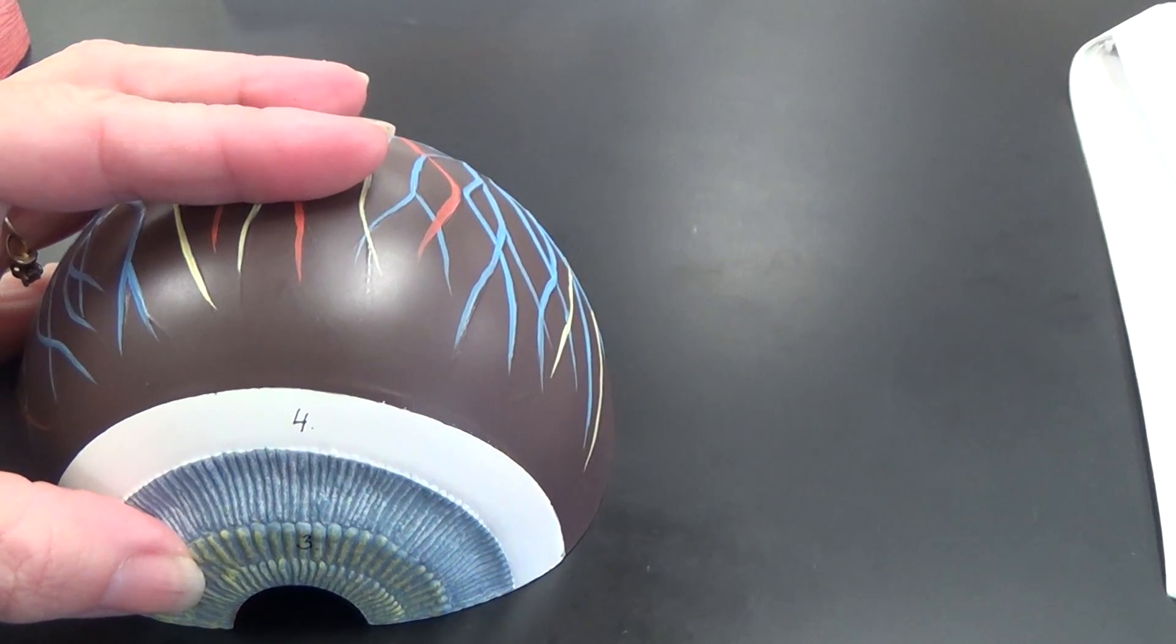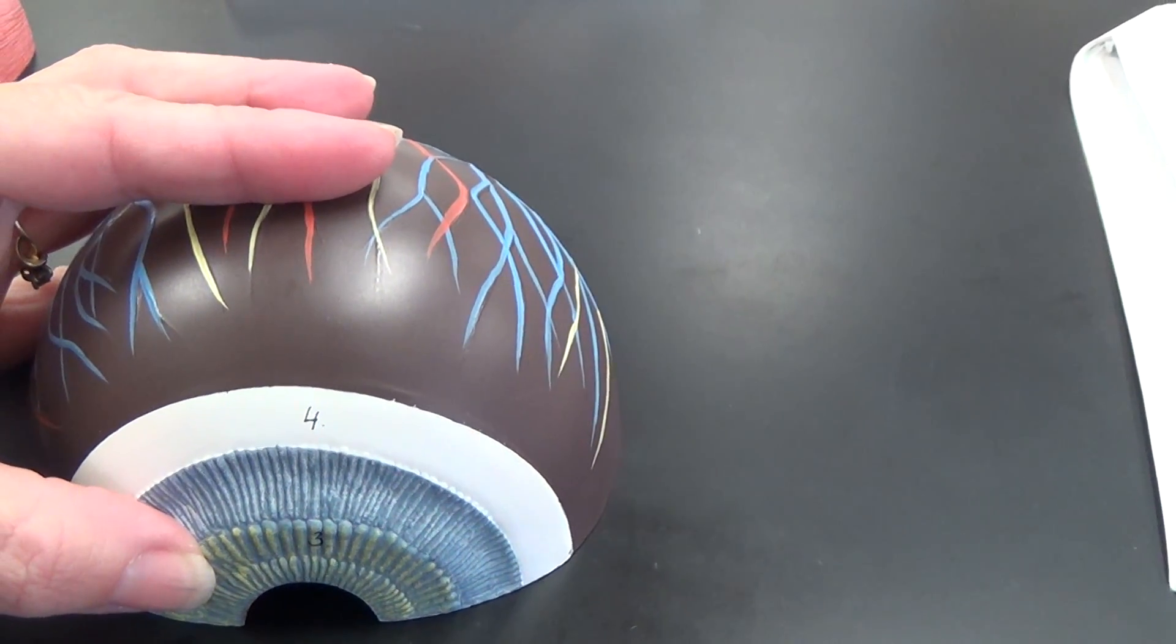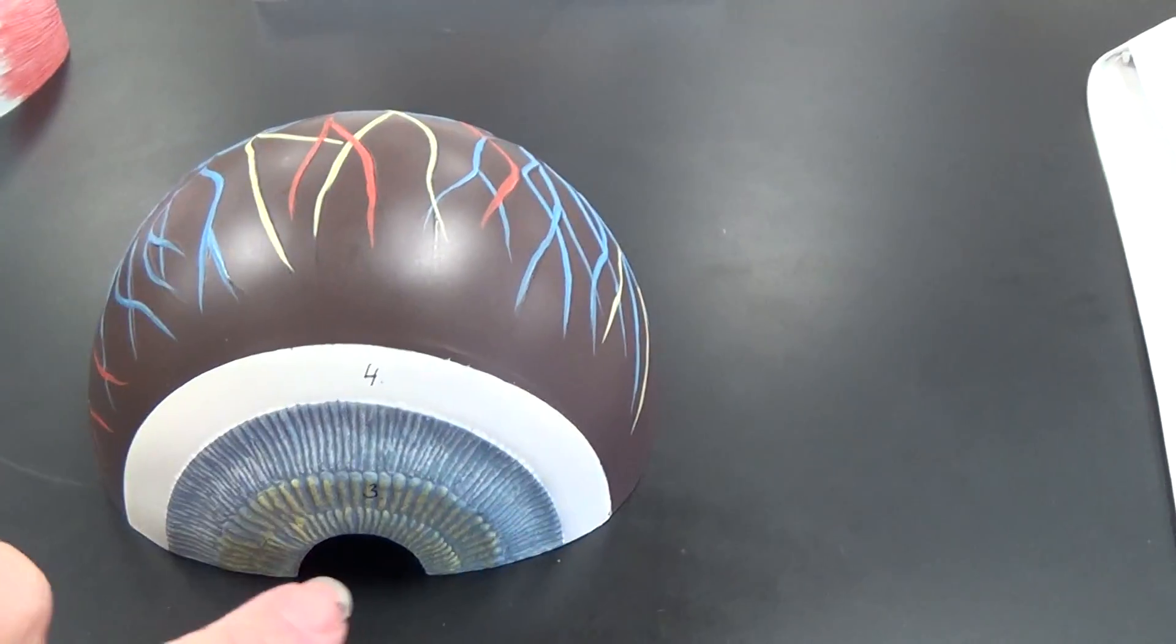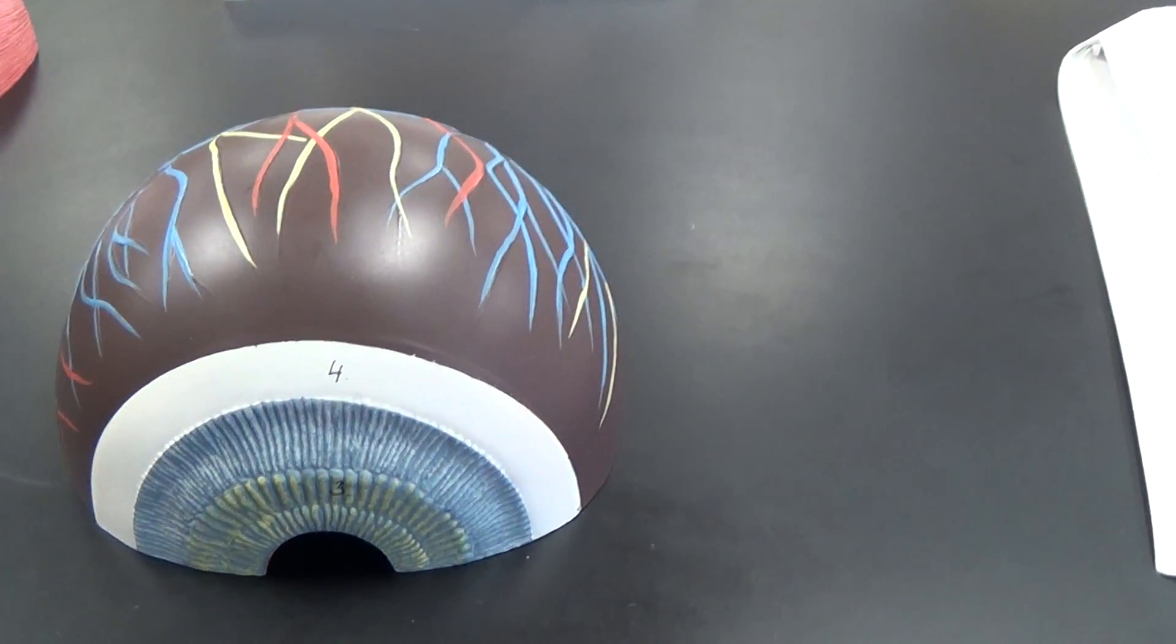This blue area here is the iris, which we know can change color for human to human. And then this hole that looks black is the pupil.